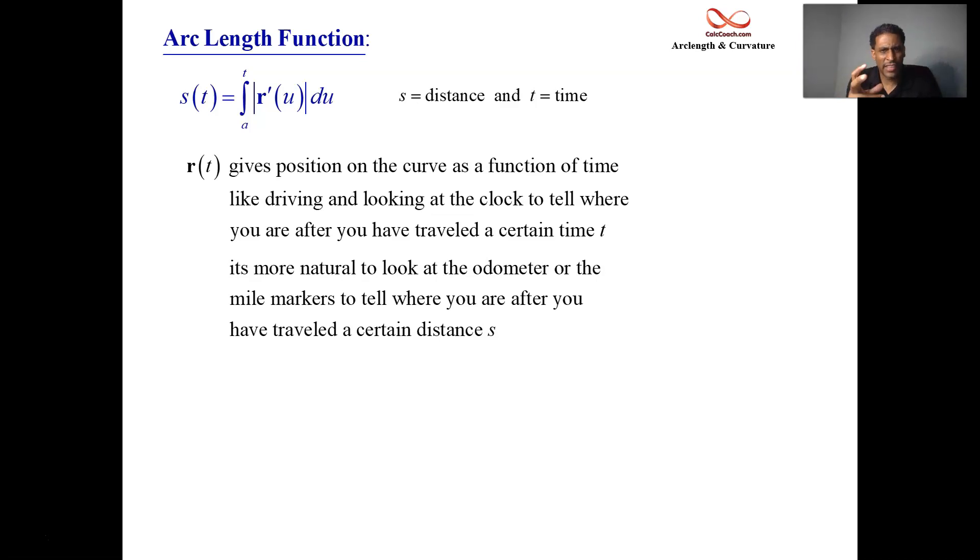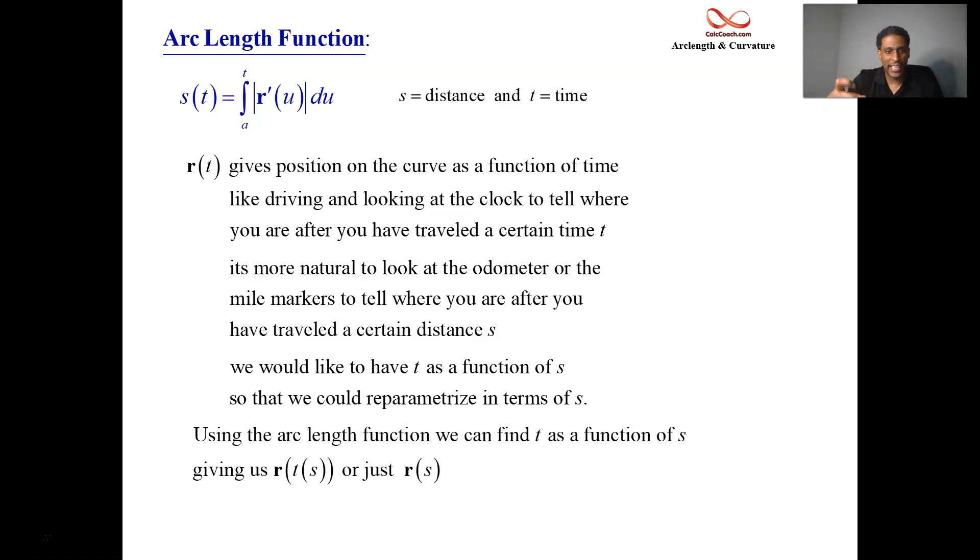And so we're going to think about recasting our position function, not to be a function of time, but to be a function of distance traveled. We're using the letter S for arc length. And so we have to make a connection between S and T. S is going to be our new input variable. T is not going to be the input variable anymore. And once we get that connection, we can replace all the T's with the formula that will replace it having S's in it. It's usually a hard thing to do, but the definition of curvature is built off of having a good grasp of this arc length function.